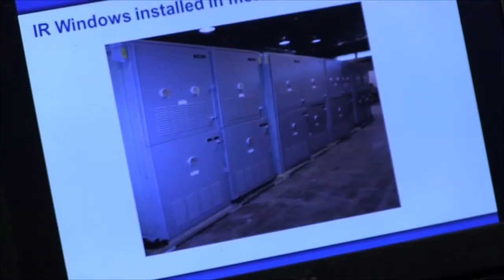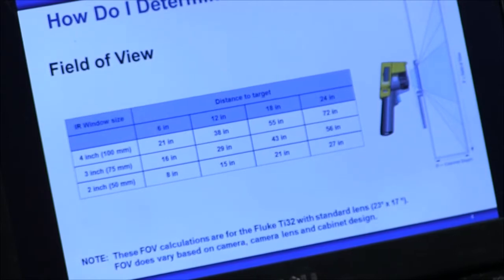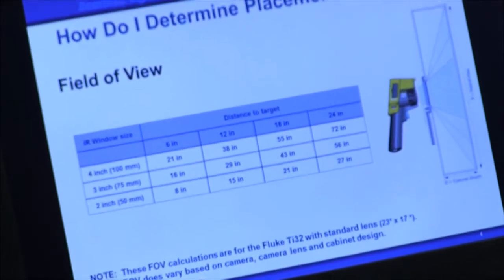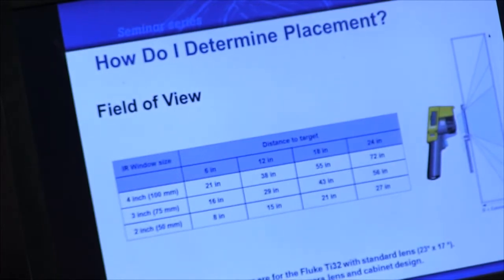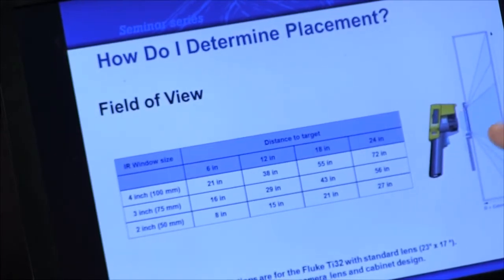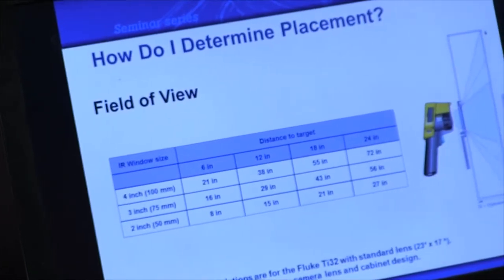The next choice will be the size. There are two inch, three inch, and four inch round models, and you not only have the straight across view but you can also angle your thermal imager for a wider view.